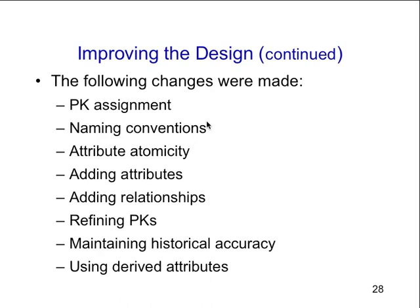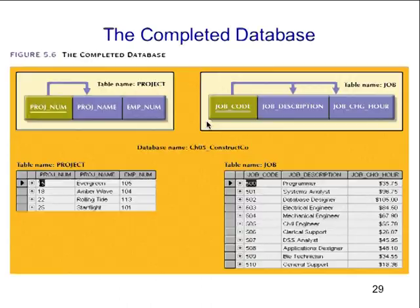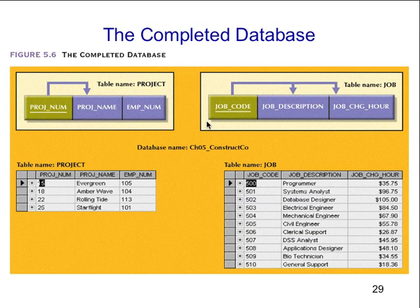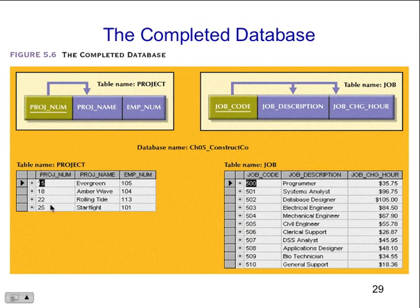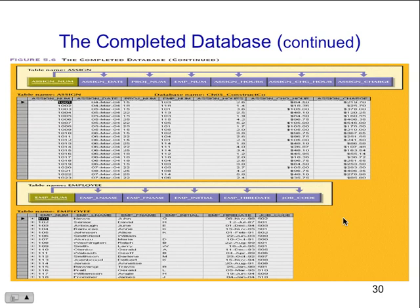We can improve the design even further. The table structures are cleaned up to eliminate the troublesome initial partial and transitive dependencies. Normalization cannot by itself be relied on to make good designs — it's good structure, but not necessarily a good design for how it's going to be used. It's valuable because it helps eliminate data redundancies. Changes made so far include primary key assignments, naming conventions of tables, attribute atomicity, adding attributes and relationships, defining primary keys, maintaining historical accuracy, and using derived attributes.